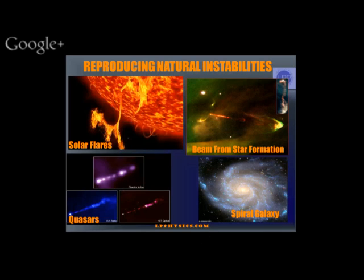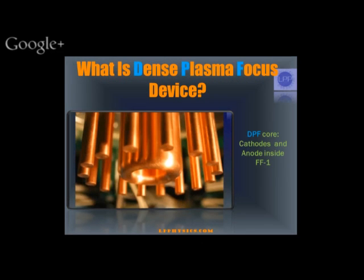What we do in the plasma focus is we attempt to utilize these instabilities — a series of such instabilities — to drive the energy density higher and higher until we have fusion reactions. This is very different than the approach you hear from most fusion colleagues, which is about trying to get the plasma to be stable, to sit still. We're reproducing these instabilities in a way to utilize them within this device.